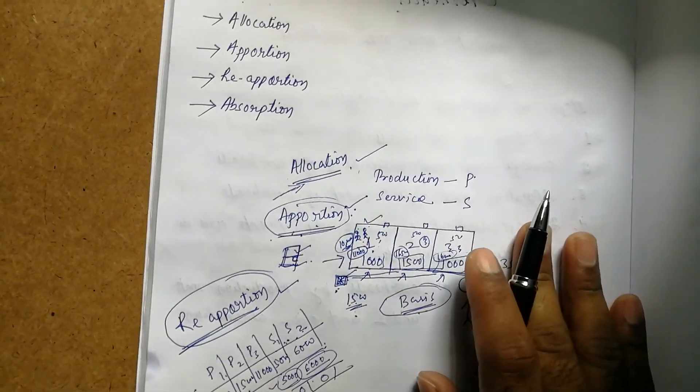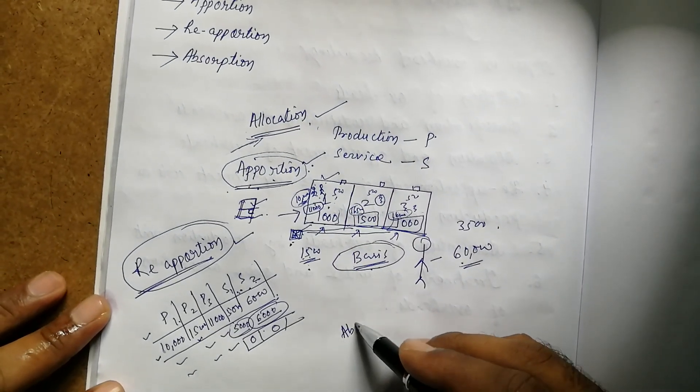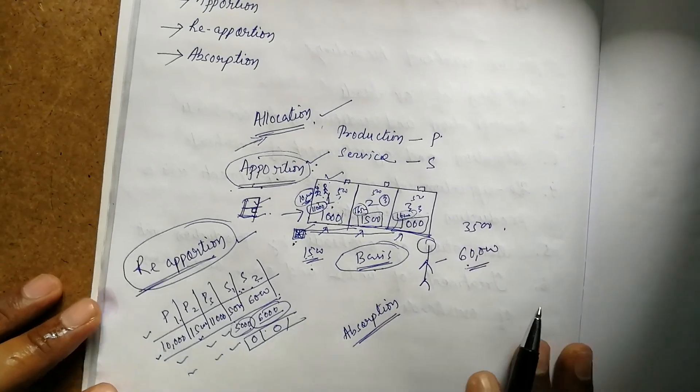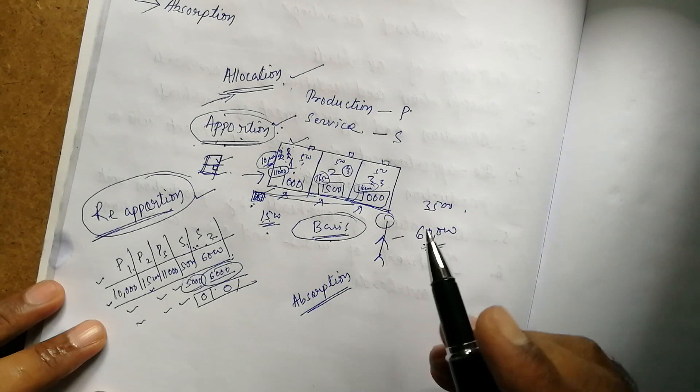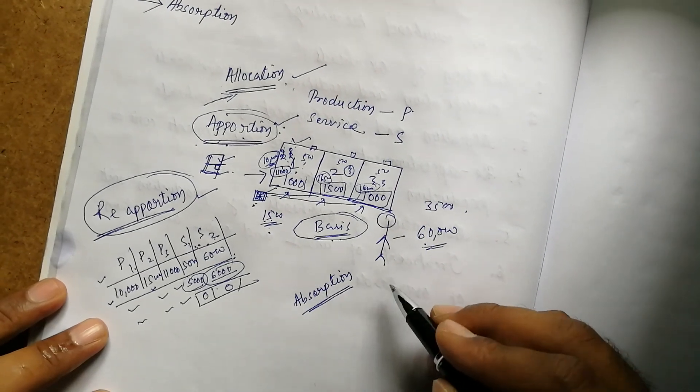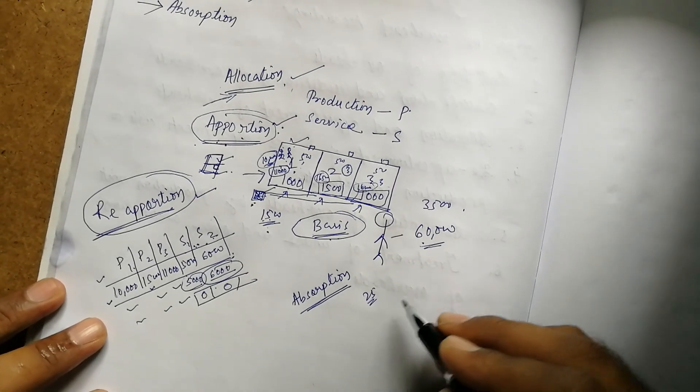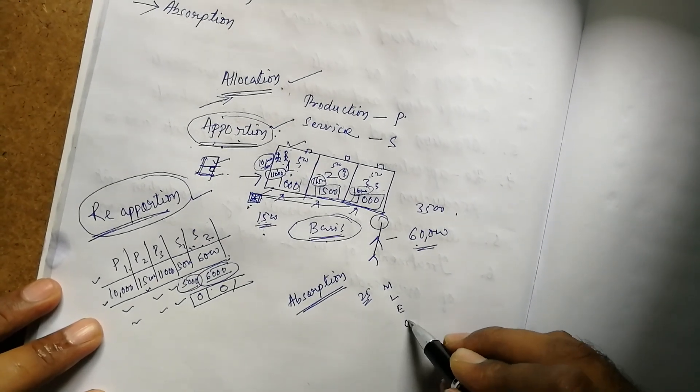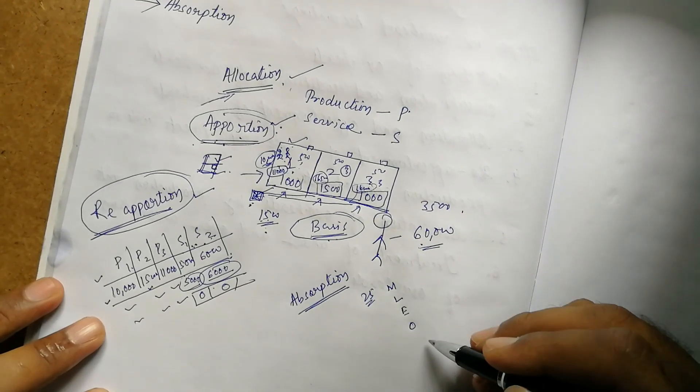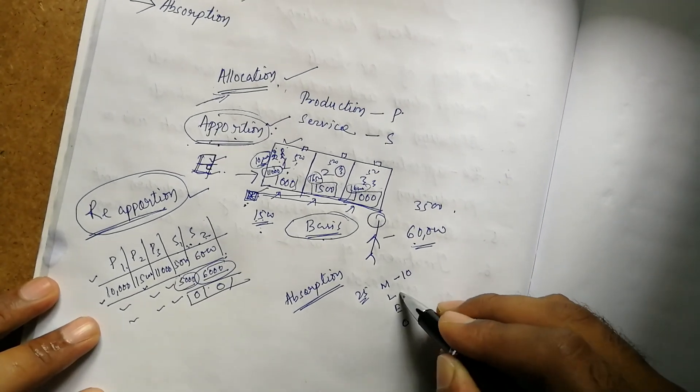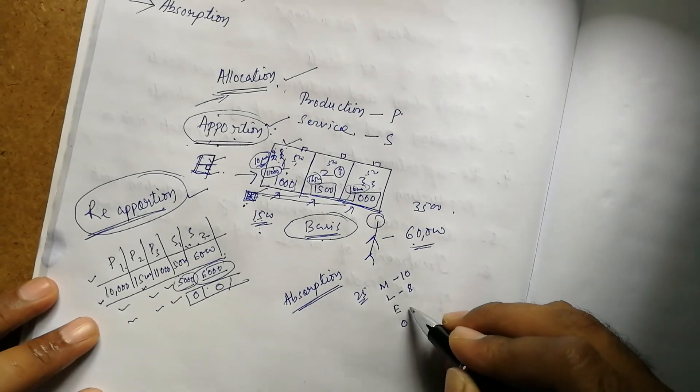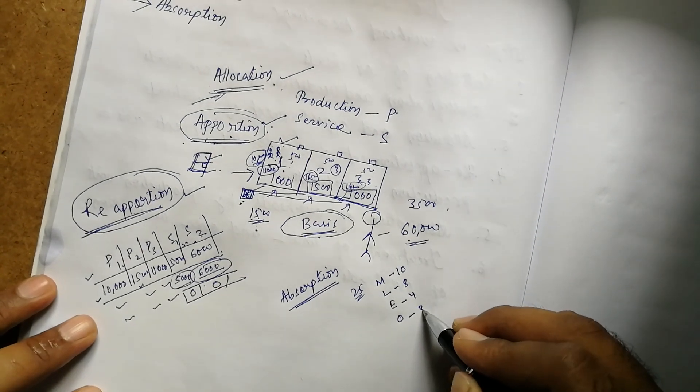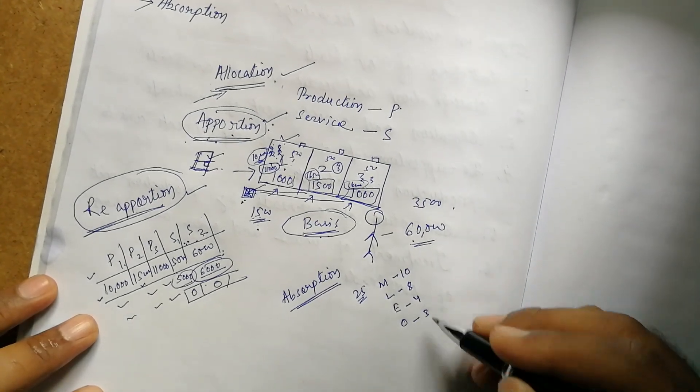Now, absorption. Suppose we're manufacturing something—say we're making a pen. To make it, we need four things: material, labor, expenses, and overhead. Material costs 10, labor costs 8, expenses cost 4, overhead costs 3. So total is 25. Now, the selling price is 30 and cost price is 25.